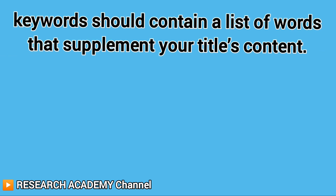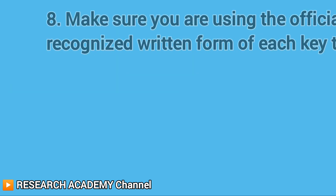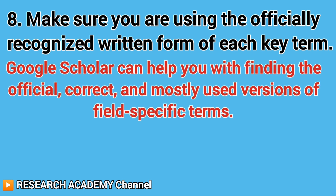Keywords should contain a list of words that supplement your title's content. Tip 7: Test your selected keywords. Do you think your article is difficult to find? Does the search pull up very similar articles to your own? Tip 8: Make sure you are using the officially recognized written form of each key term. Failure to do so might result in fewer hits for your article. Google Scholar can help you find the official, correct, and mostly used versions of field-specific terms.